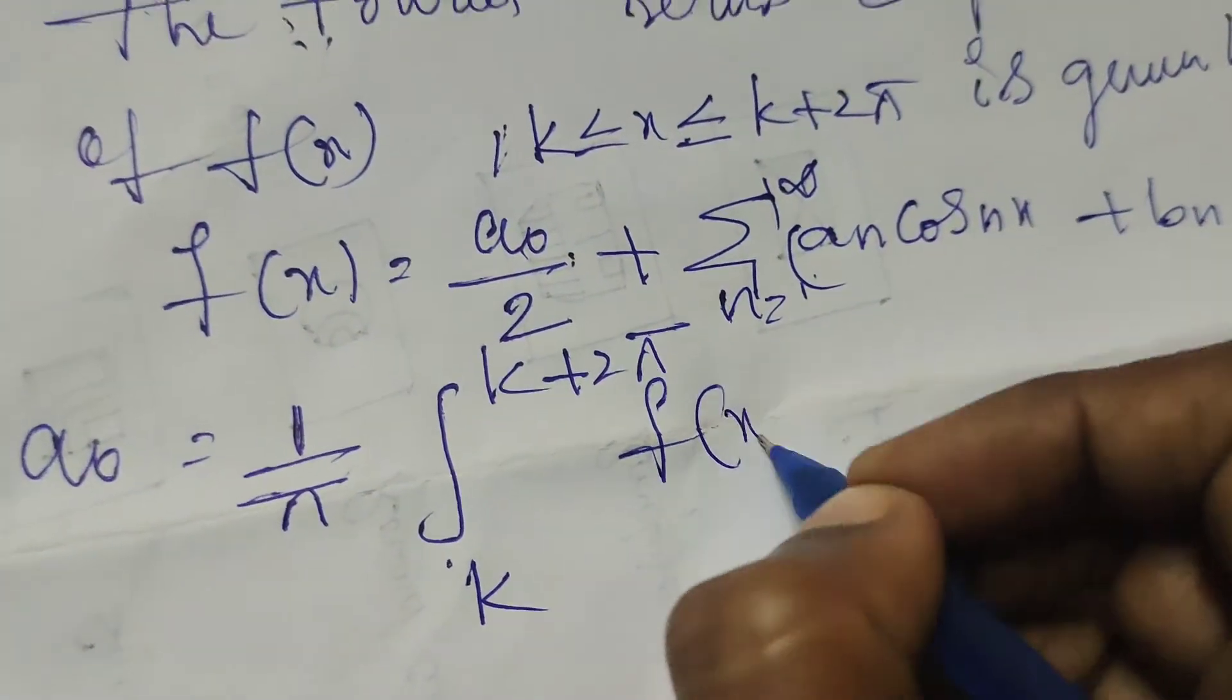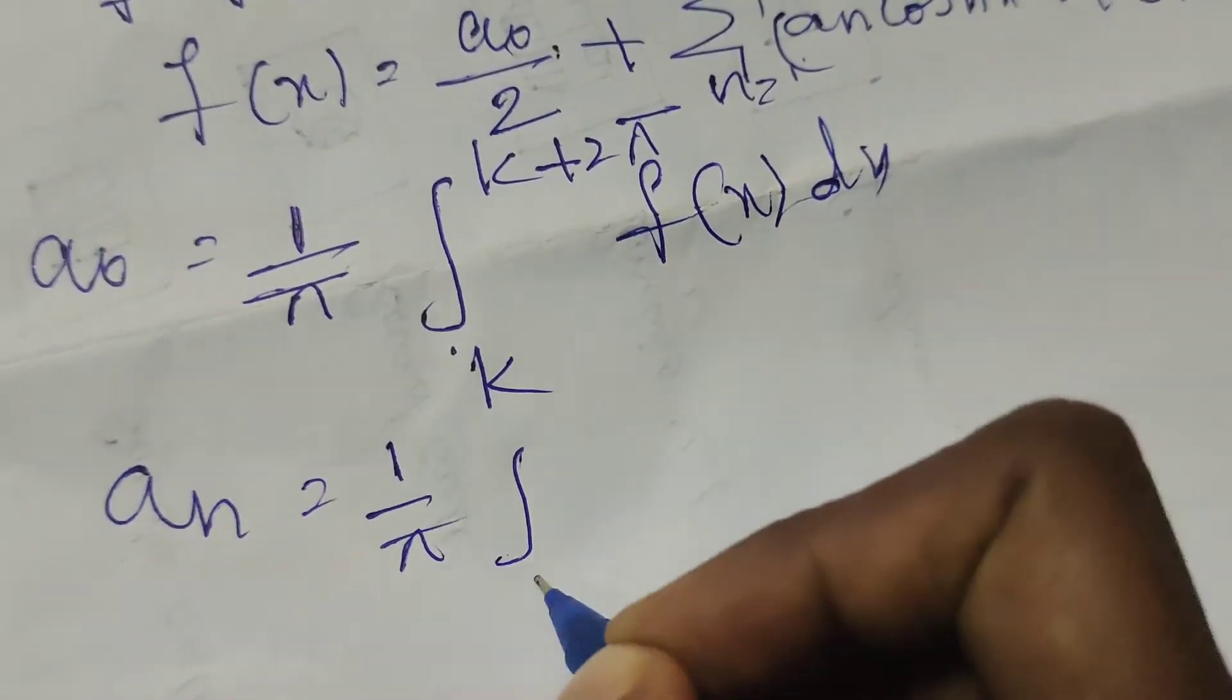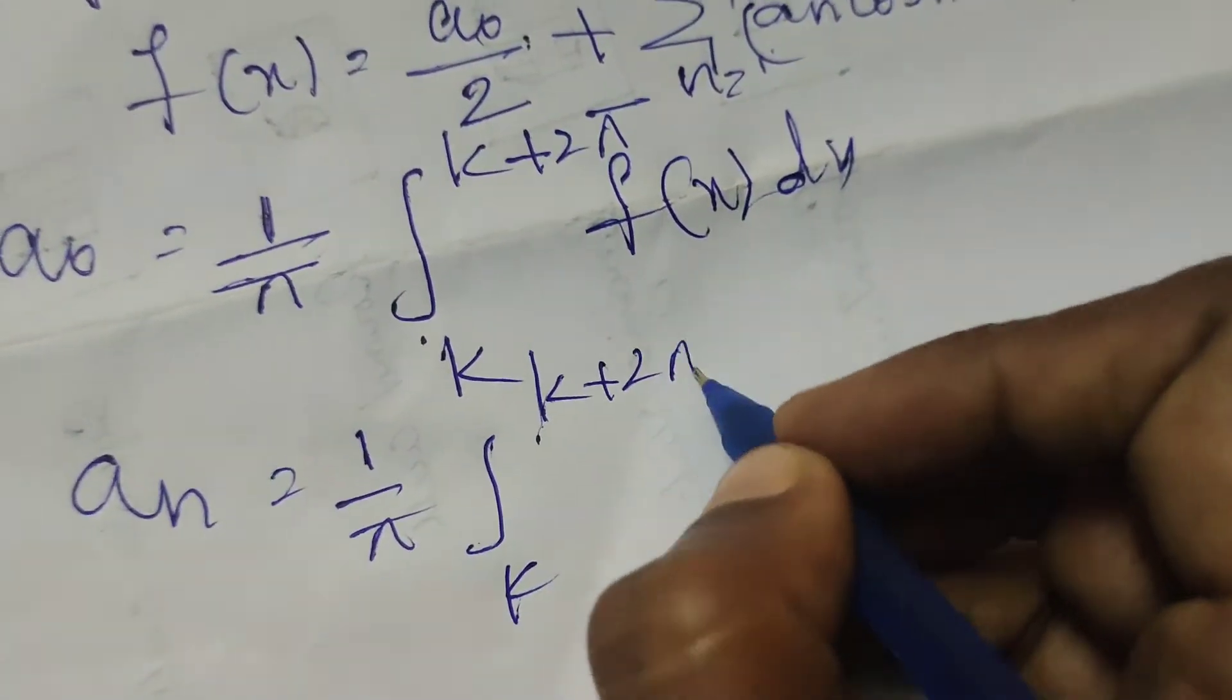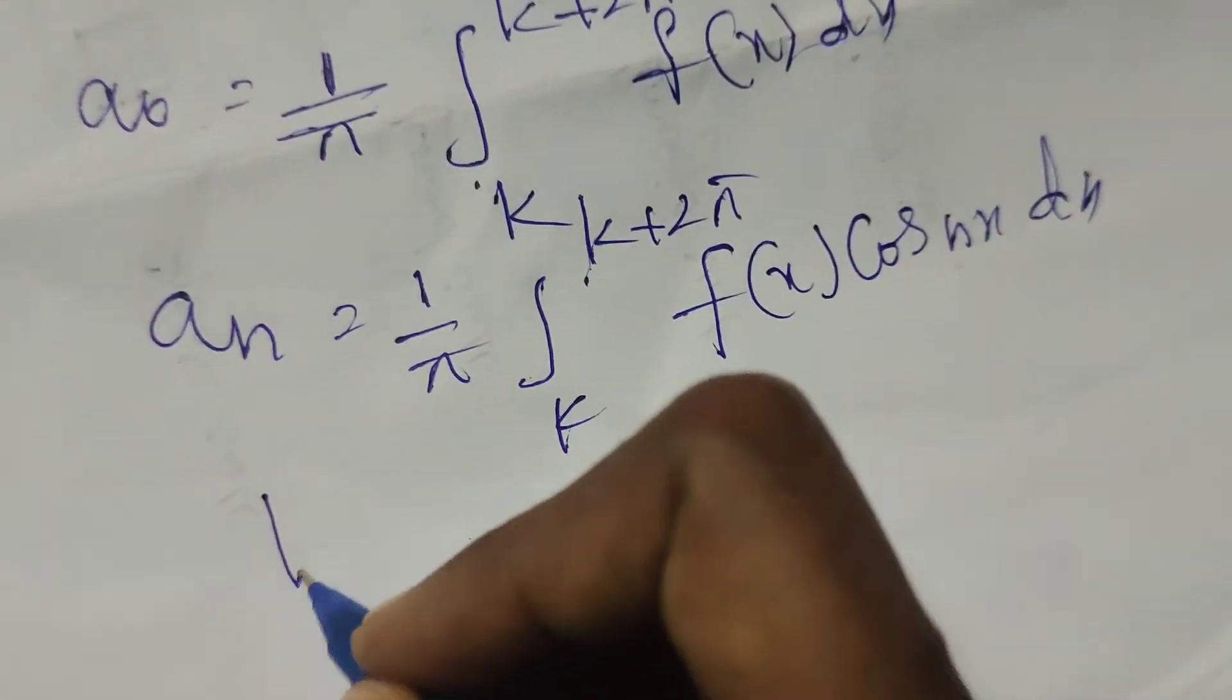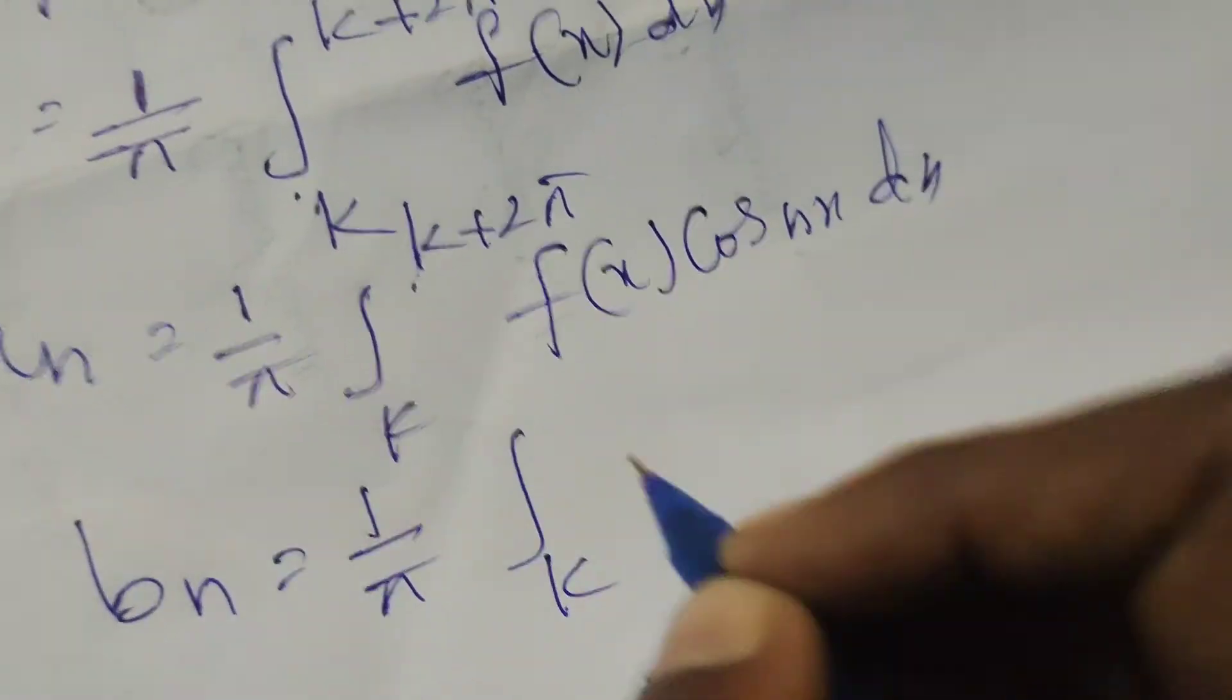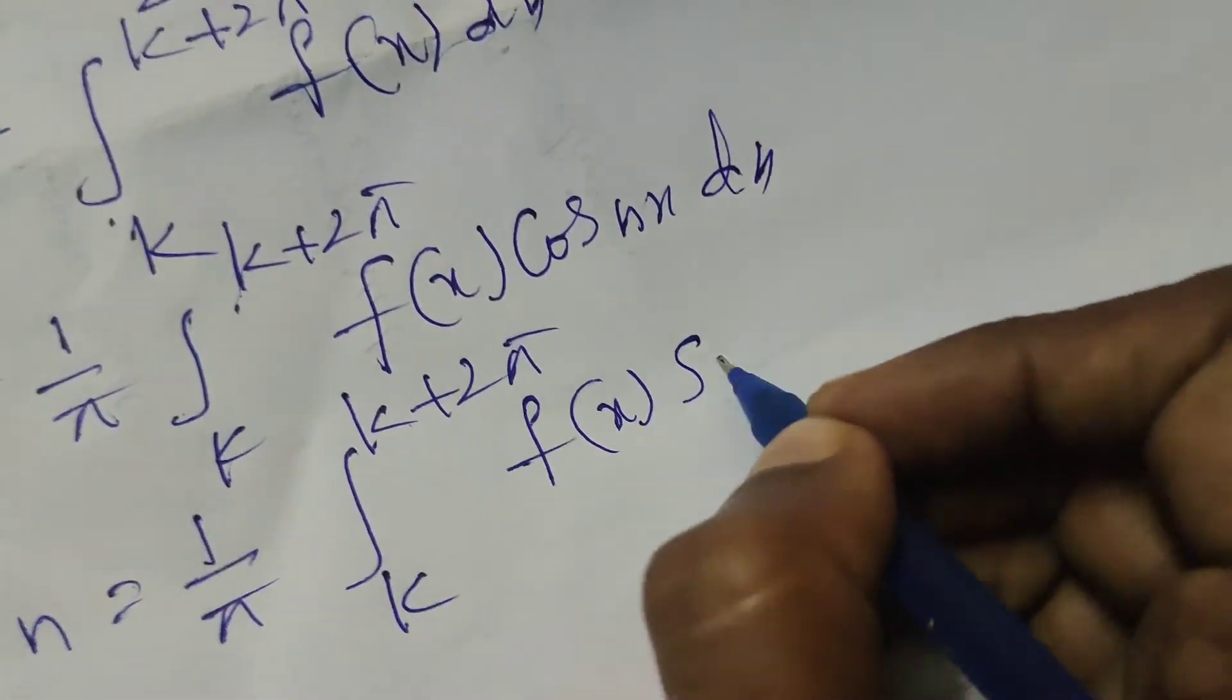Next, the constant an equals 1 by π, integral k to k plus 2π, f of x cos nx dx. Next, bn equals 1 by π, k to k plus 2π, f of x sin nx dx.